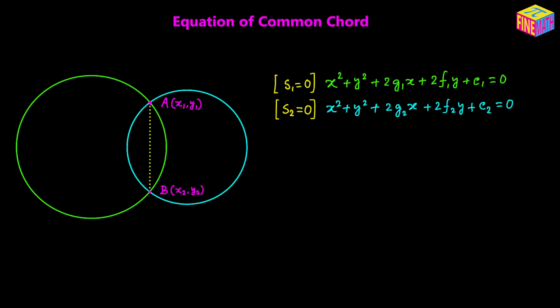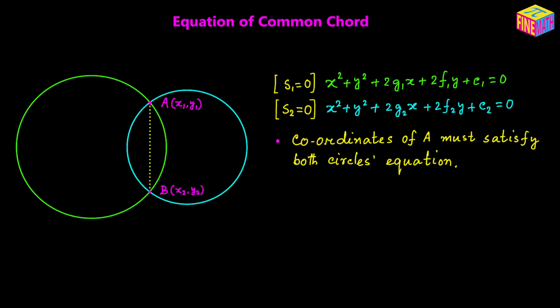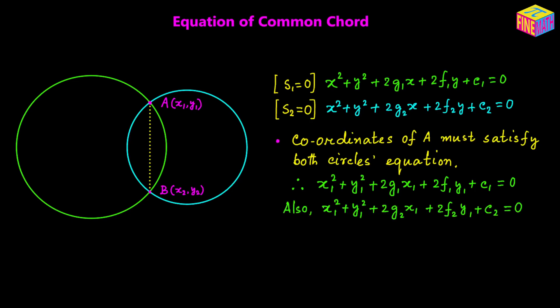Since both circles pass through point A, A's coordinates must satisfy the equations of both circles. Substituting into the first equation: x sub 1 squared plus y sub 1 squared plus 2 g sub 1 x sub 1 plus 2 f sub 1 y sub 1 plus c sub 1 is equal to 0. Similarly, substituting into the second equation: x sub 1 squared plus y sub 1 squared plus 2 g sub 2 x sub 1 plus 2 f sub 2 y sub 1 plus c sub 2 is equal to 0.